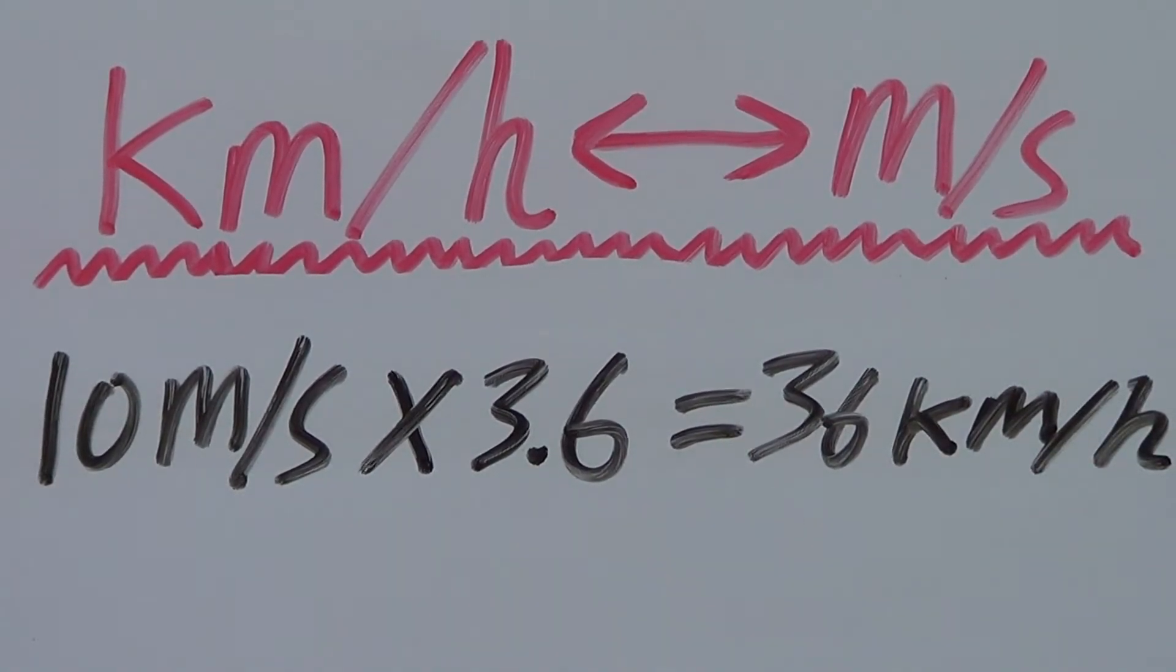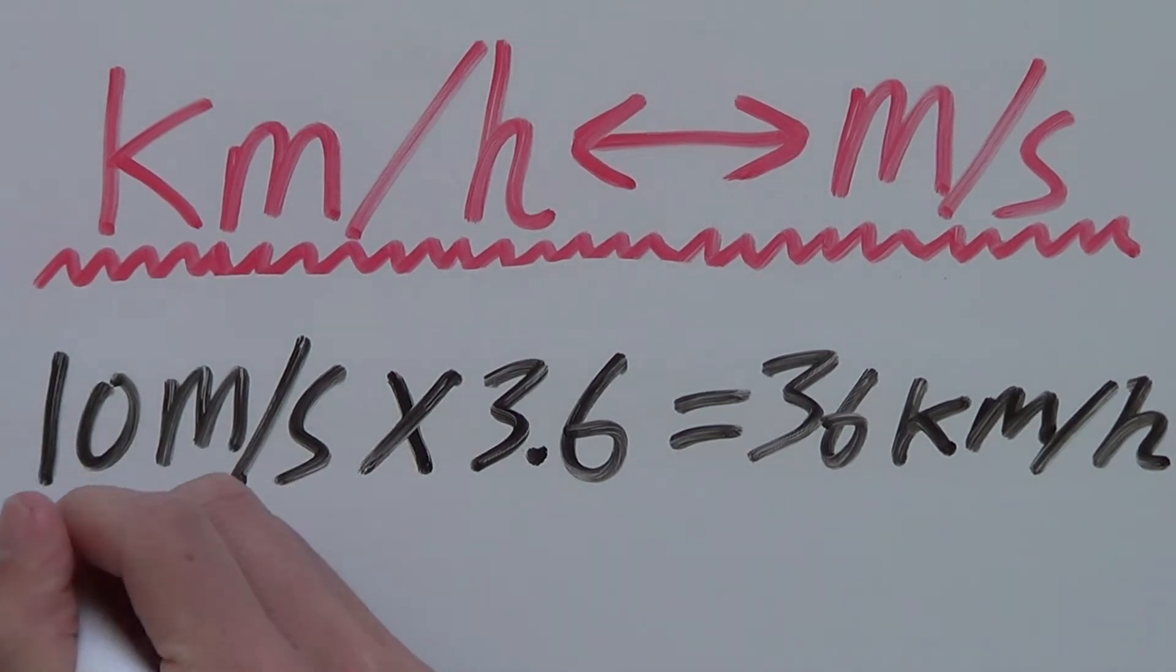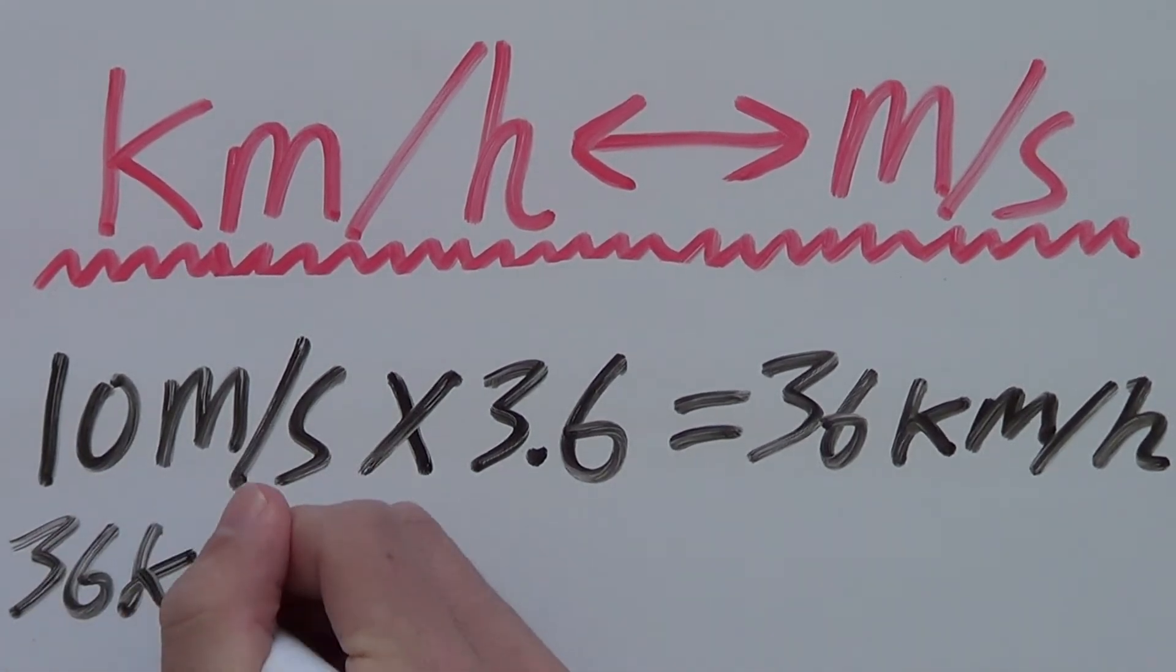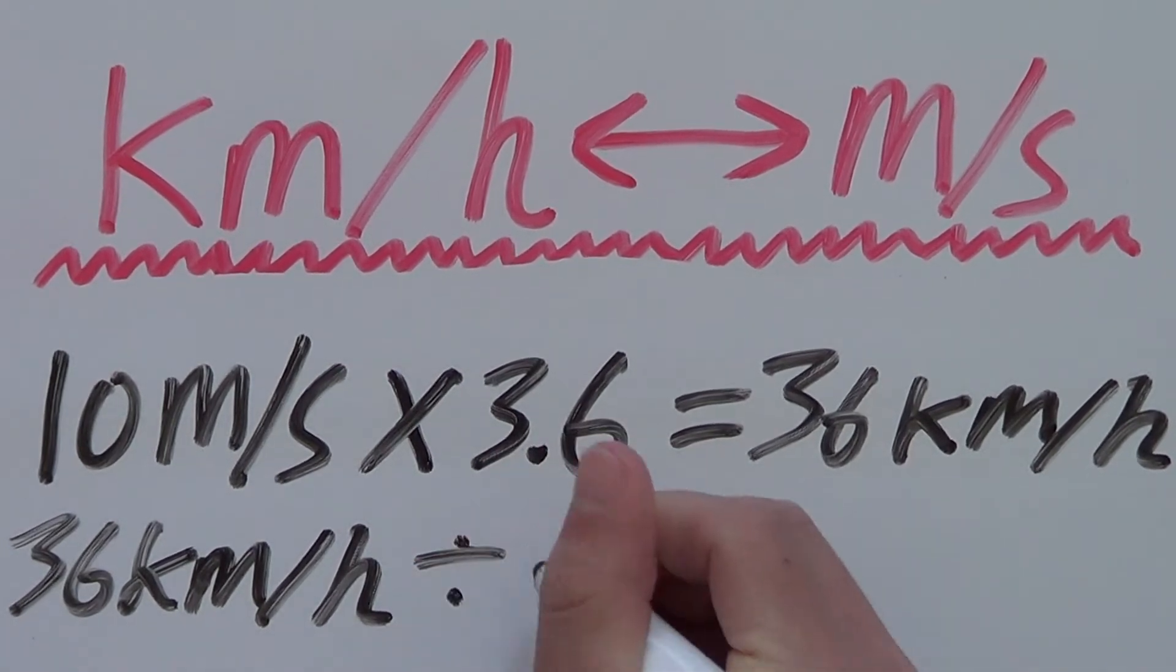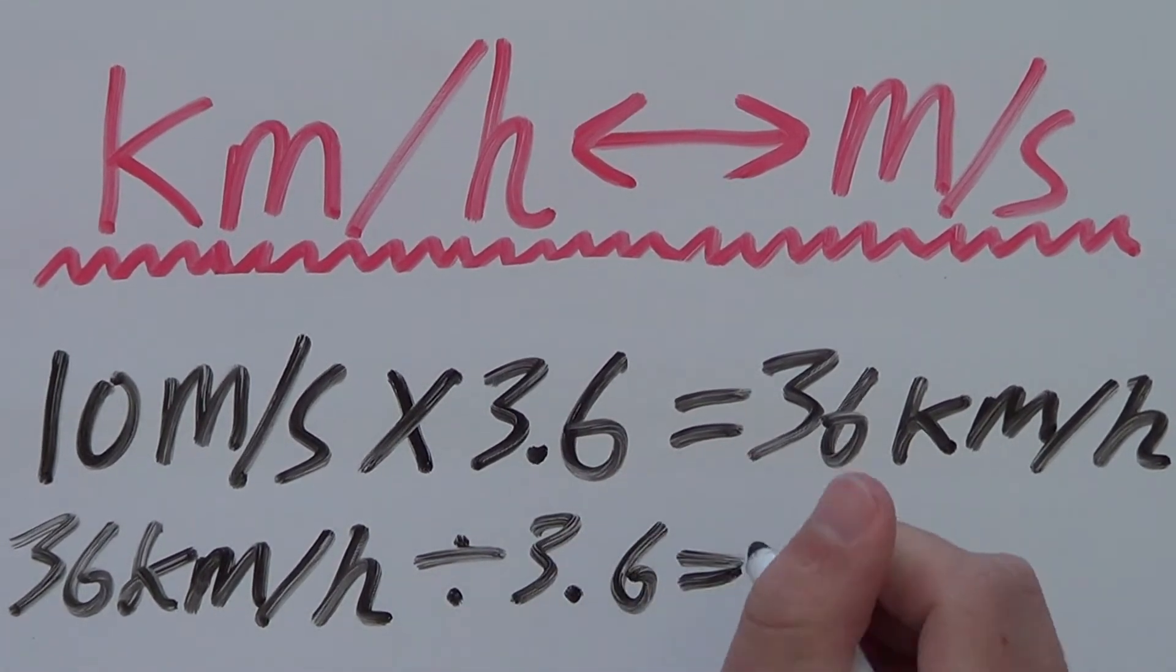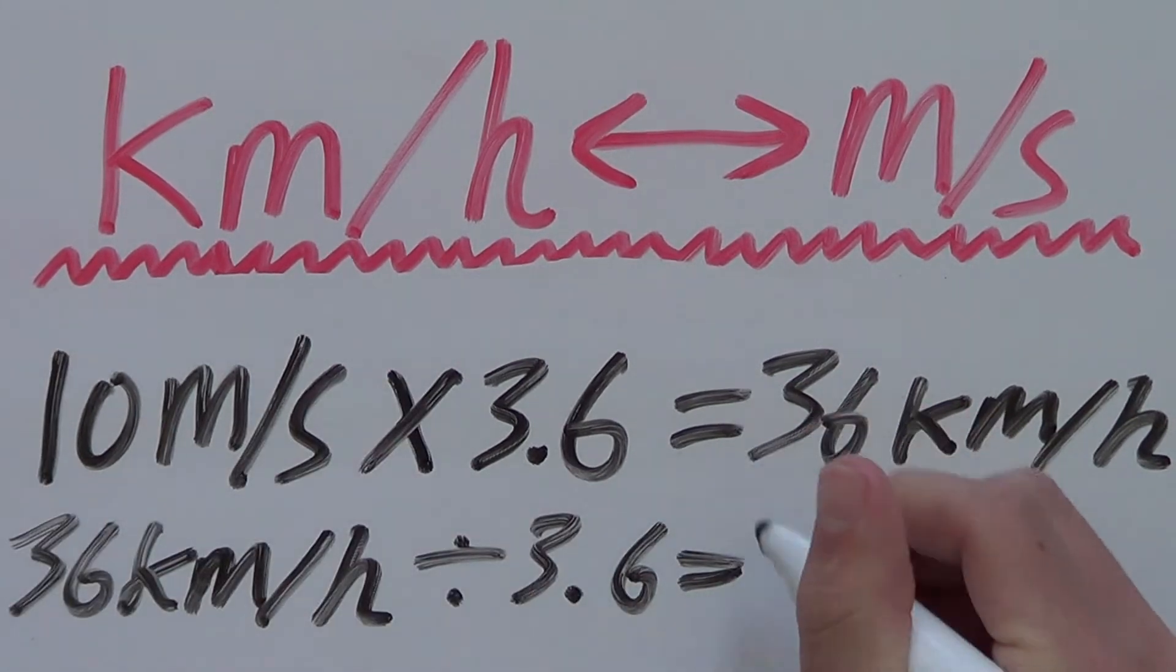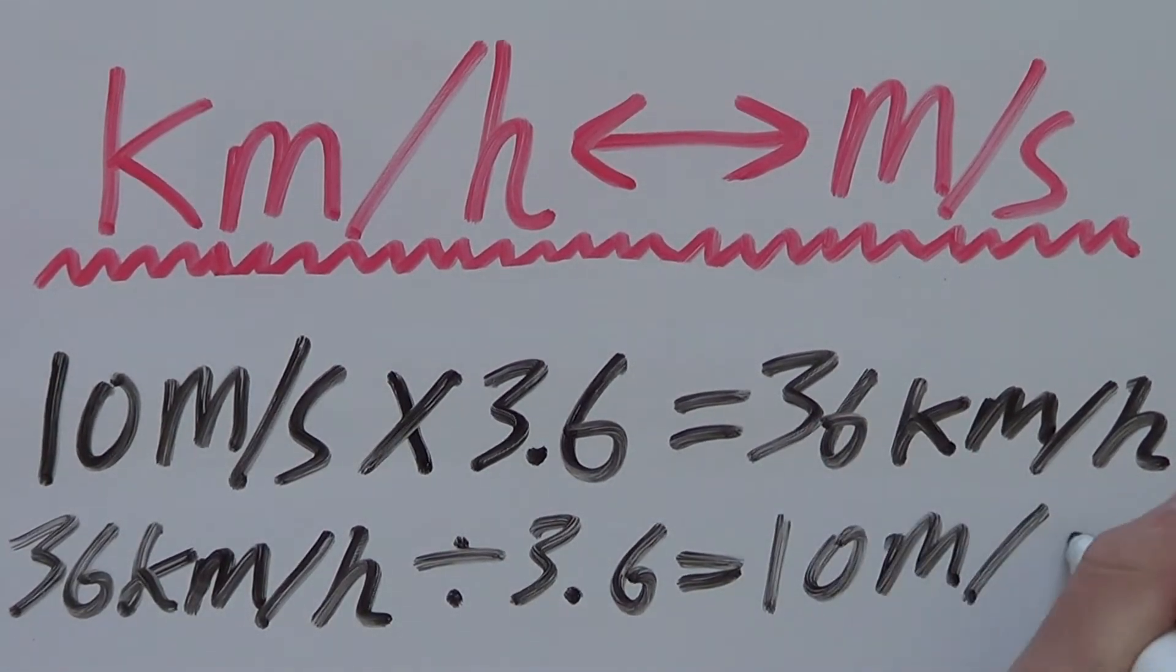And if you wanted to go the other way around, so 36 kilometers per hour back to meters per second, you would divide by 3.6, which will give you 10 meters per second.